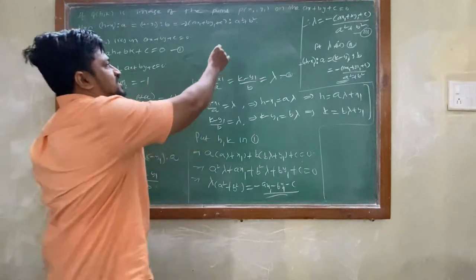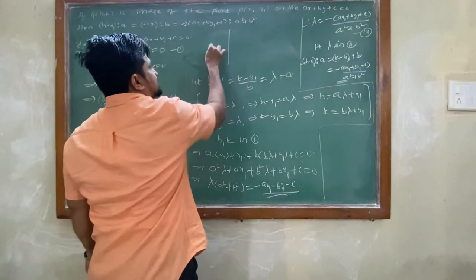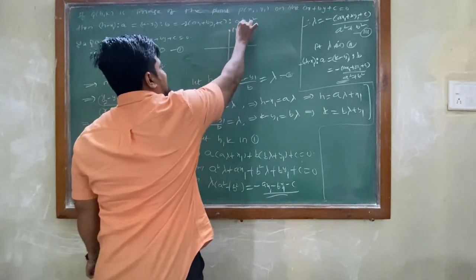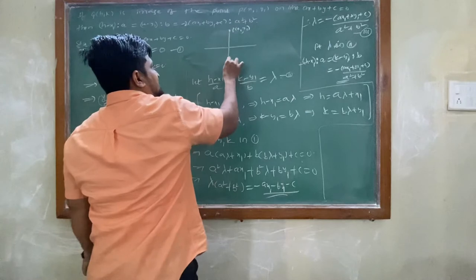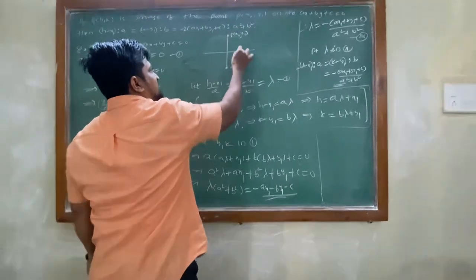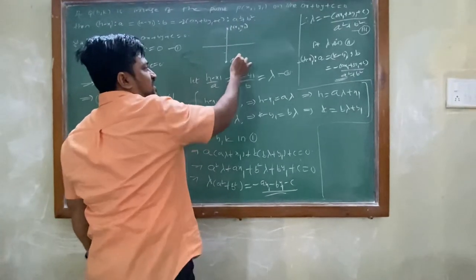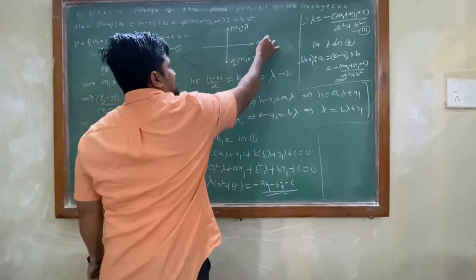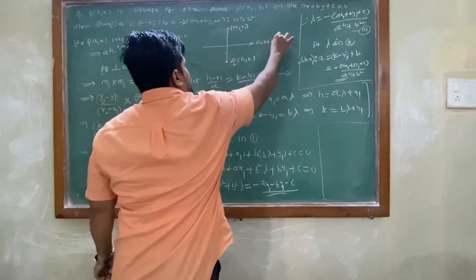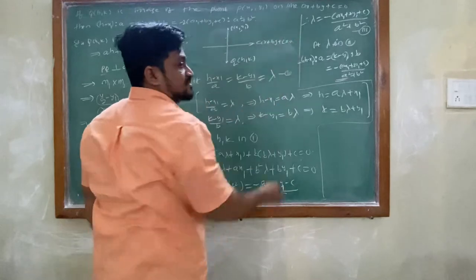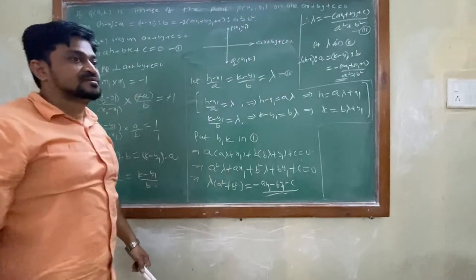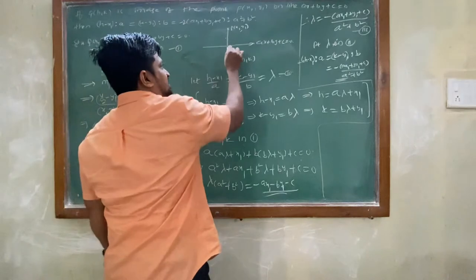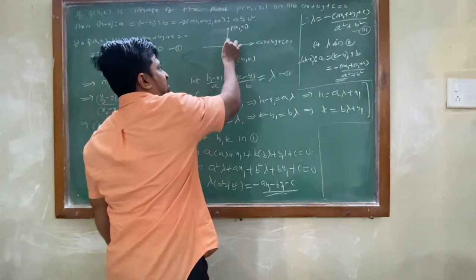Image means: if P(x1,y1) is a point and Q(h,k) is its image, then the two distances from the line are equal — the line acts as a mirror between them. This is also called the reflection of point P. So Q is the reflection of P in the line ax+by+c=0.